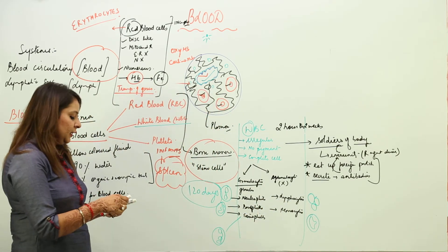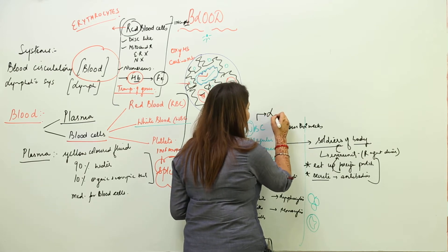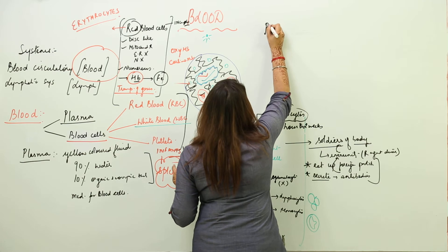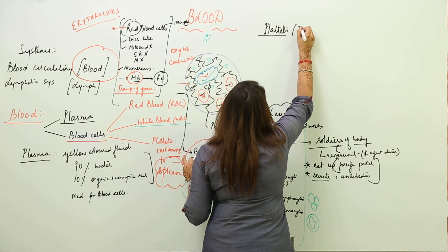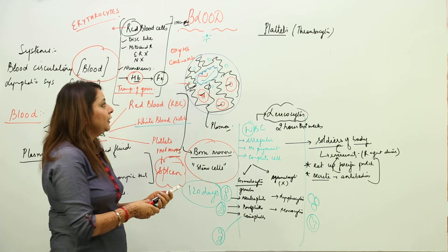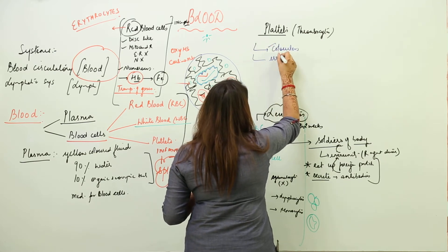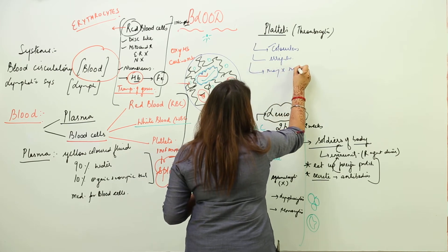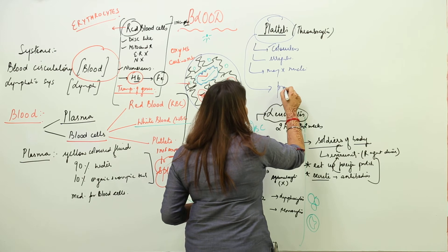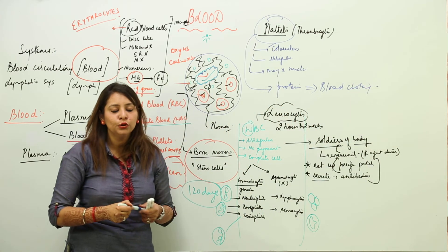The other name for WBC is leukocytes. The third type of blood cell is platelets, also called thrombocytes. Platelets are colorless and irregular in shape. They may or may not have a nucleus, but most of the time they lack one. Their main function is to synthesize certain proteins that perform the important process of blood clotting.